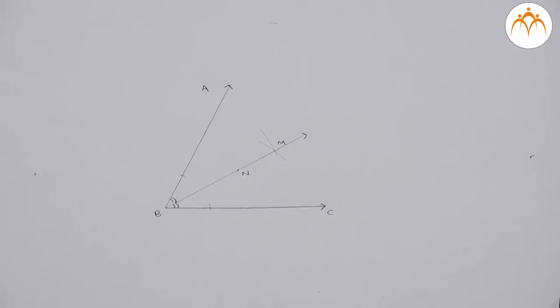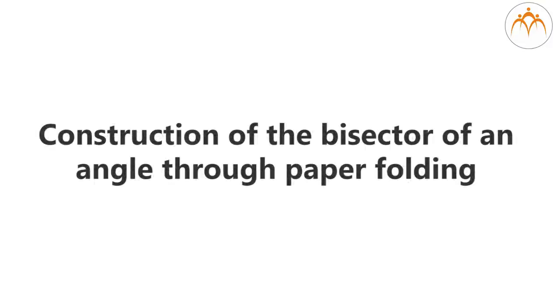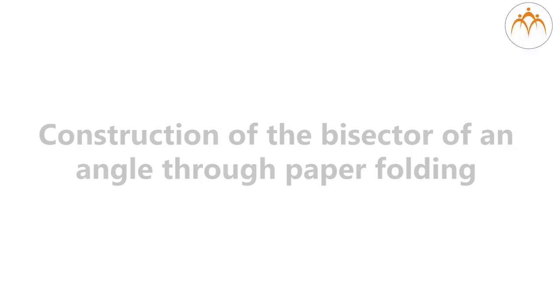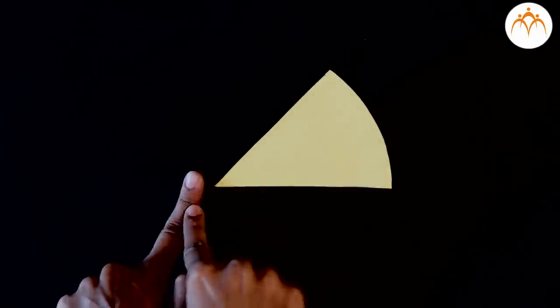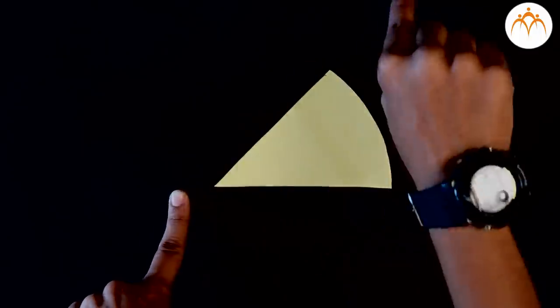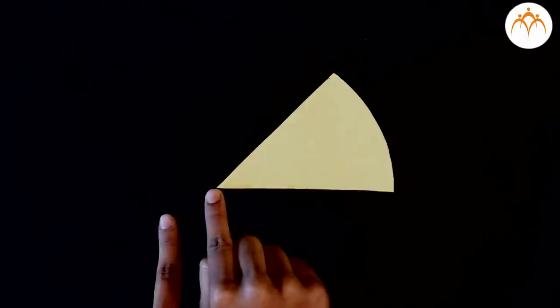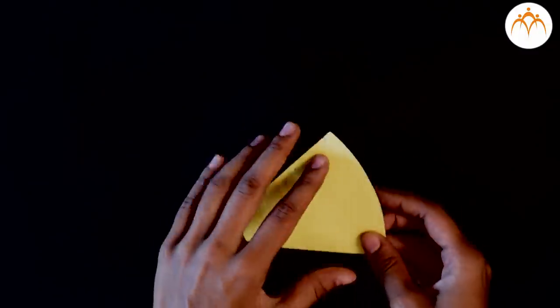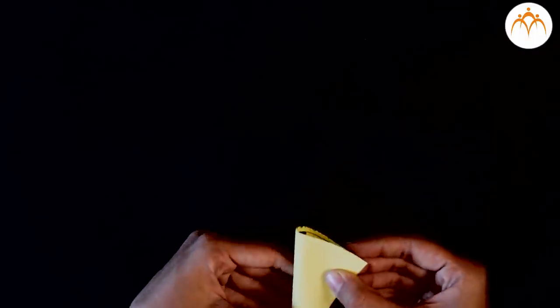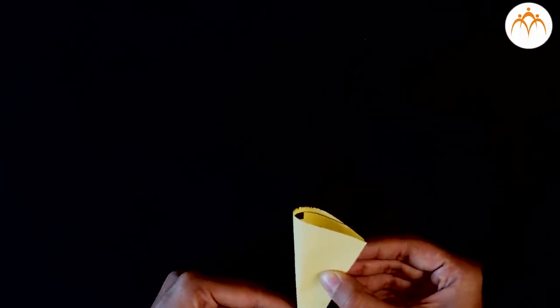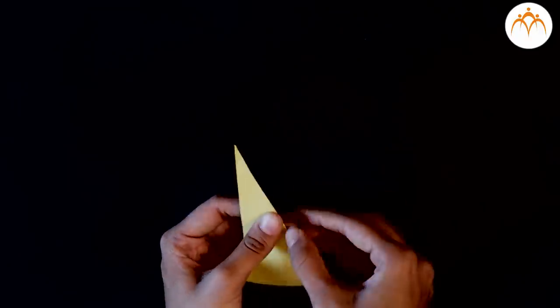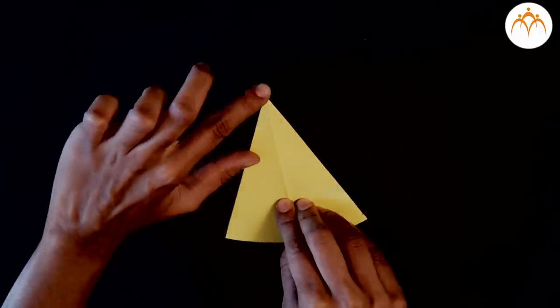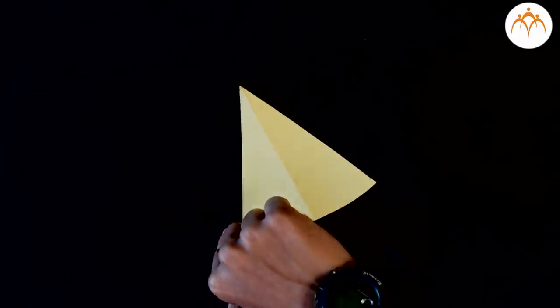The concept of an angle bisector can be easily understood via paper folds. Let's draw a 60-degree angle on a piece of paper and cut the paper along the arms of the angle. You can see that there are infinitely many points in the interior of this angle. Fold the paper so that both arms of the angle coincide with each other; the fold passes through the vertex. Unfold the paper to see the crease line, which forms the angle bisector of the given angle.